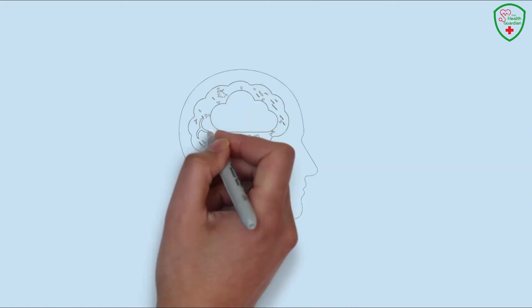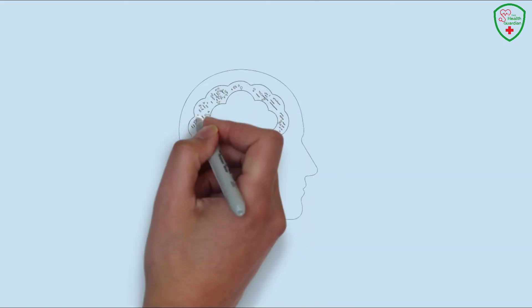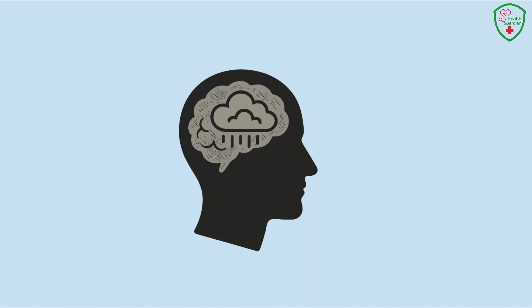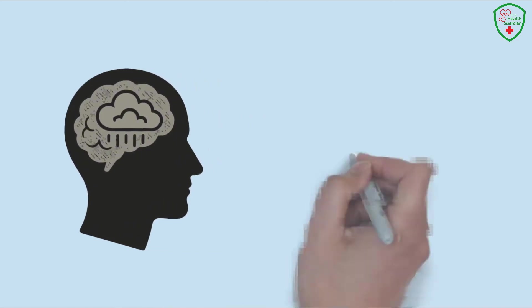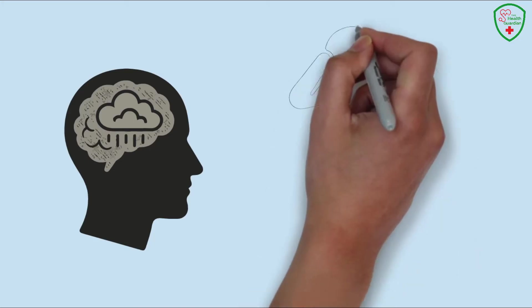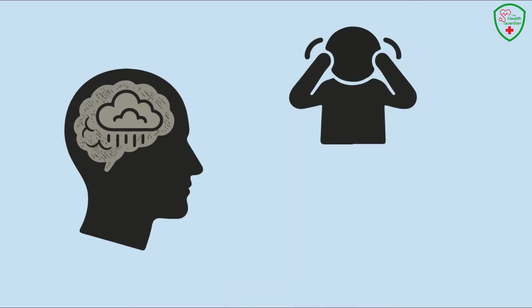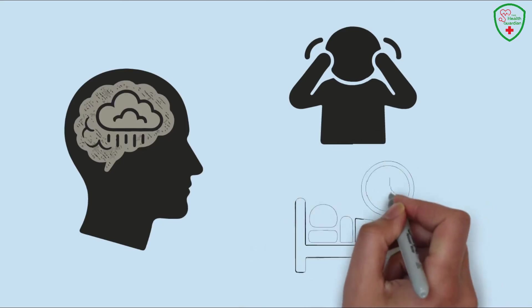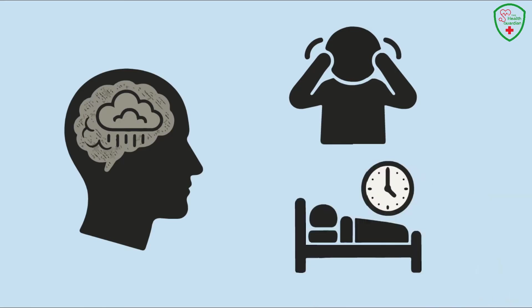But hold up. COVID-19 isn't just attacking your body. It's messing with your head, too. In 2025, we're hearing more about psychological symptoms like anxiety that keeps you up at night, depression that feels like a heavy cloud you can't shake, and insomnia that leaves you staring at the ceiling at 3am. These aren't just feeling down moments. They can be intense and linked to the virus, including the new FLIRT variants.